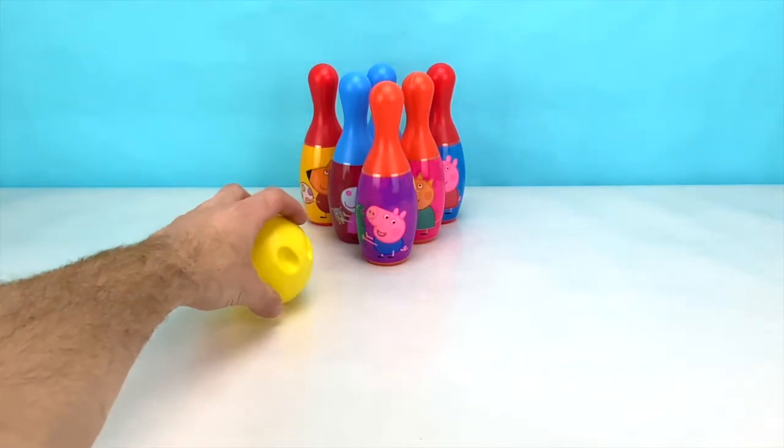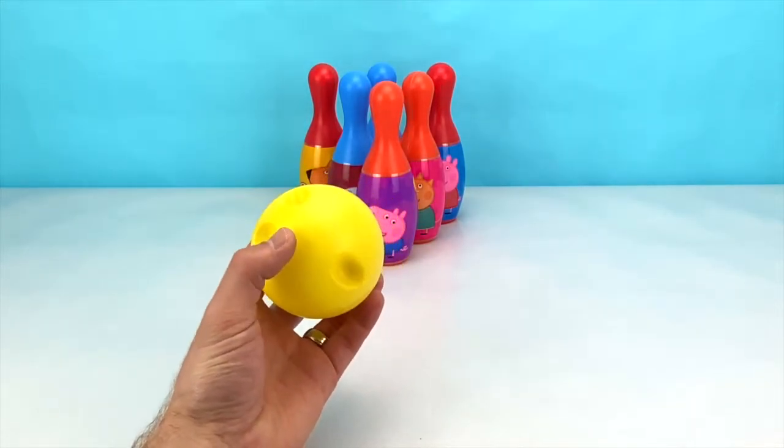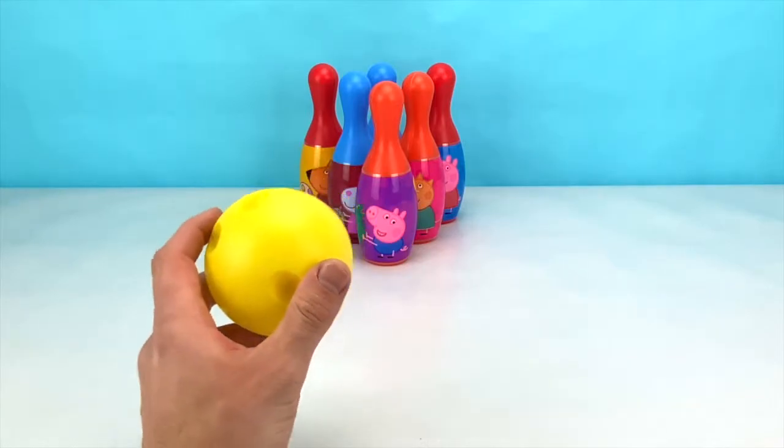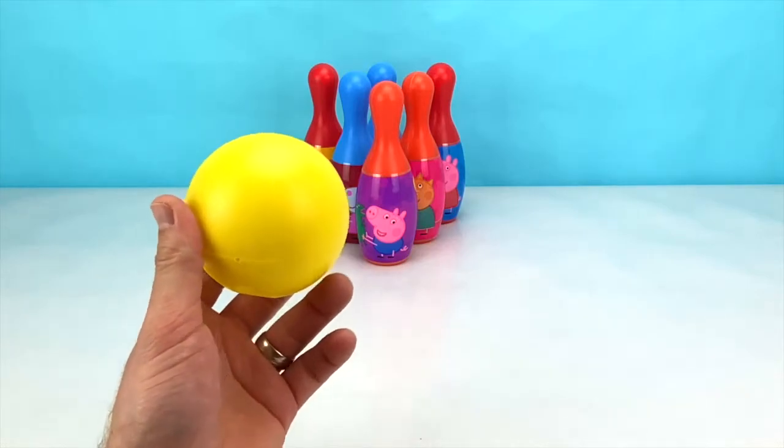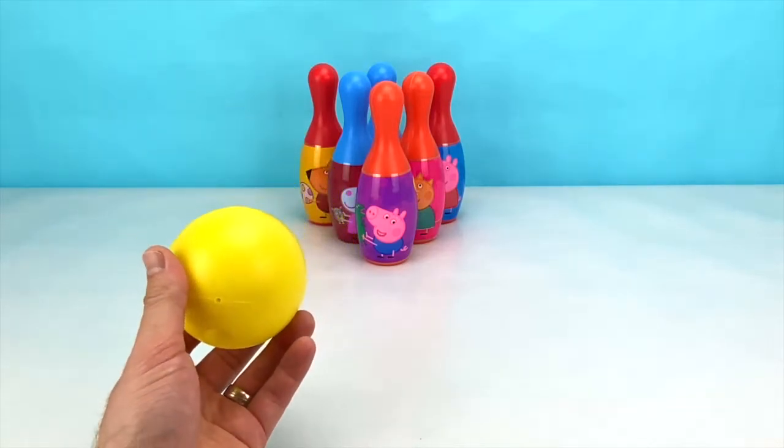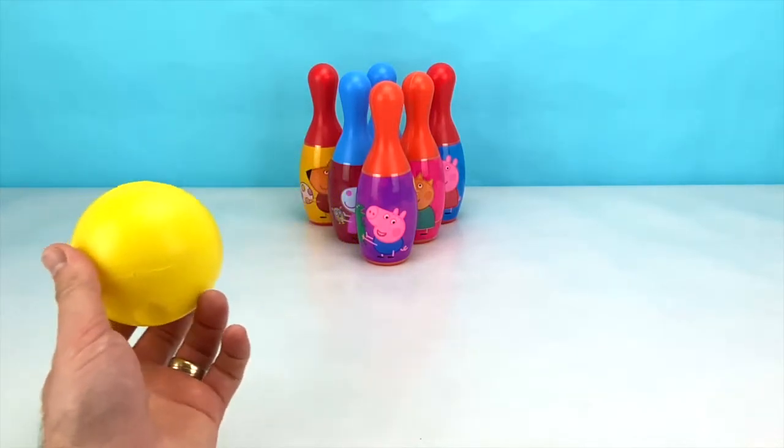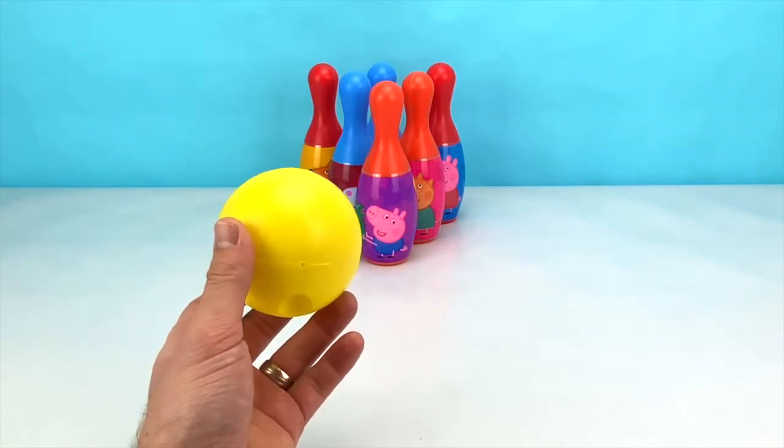So next we're gonna grab our yellow ball, and we're gonna try and hit as many pins as we can. Then, we're gonna subtract whatever number we hit from the number six, because that's how many pins we have! Alright, let's get started! Here we go! First roll!